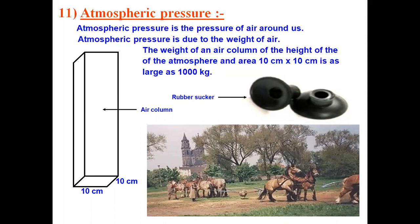Atmospheric pressure is the pressure of air around us and it is exerting everywhere. But why do we not feel it? Why are we not crushed under atmospheric pressure? The answer is that blood inside our body is also exerting a pressure, and that blood pressure is exactly equal to the atmospheric pressure. Since both are equal, they cancel each other's effect, which is why we do not feel the atmospheric pressure from outside.